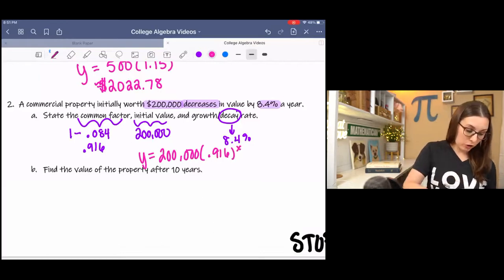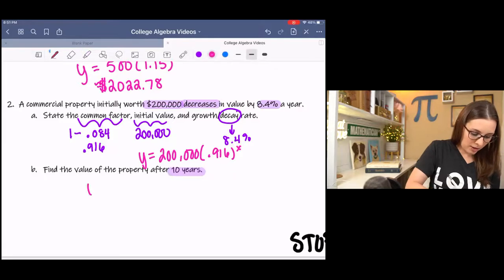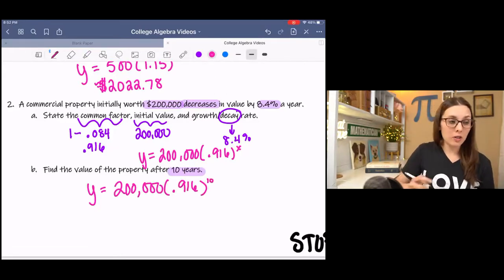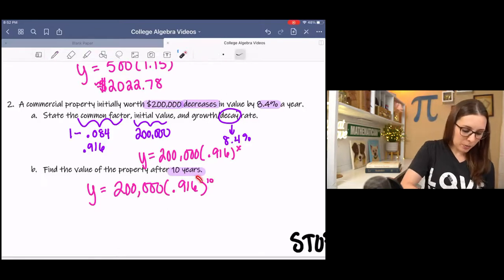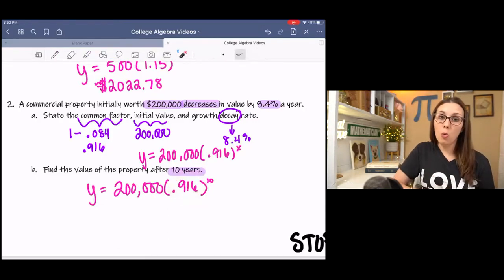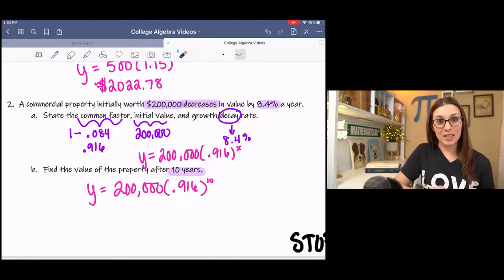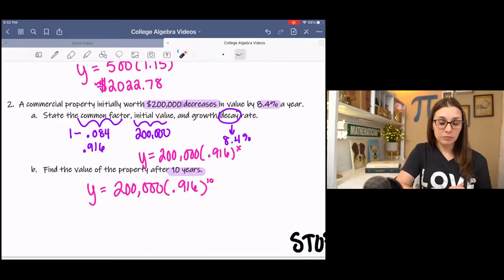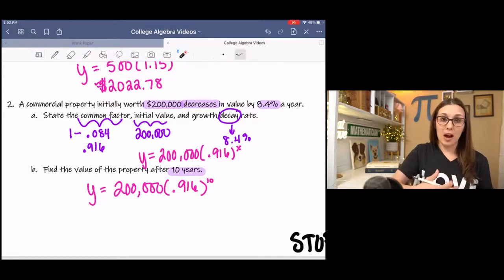Then after 10 years, that means we're plugging in 10 for the years. And then just plugging it into your calculator. This 0.916 is below 1. It's less than 1. So it indicates decay. So if you're just looking at the equation and you're trying to decide if it's growth or decay, since it's below 1, it's decay.